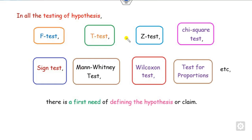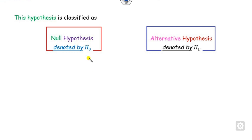As we all know, in the testing of hypothesis — such as the F test, T test, Z test, chi-squared, Wilcoxon, and many more — the first thing we need to define is the hypothesis, called H. Whatever your claim is, you have to define that. This hypothesis is basically of two kinds: called the null hypothesis denoted as H0, and the alternative as H1.